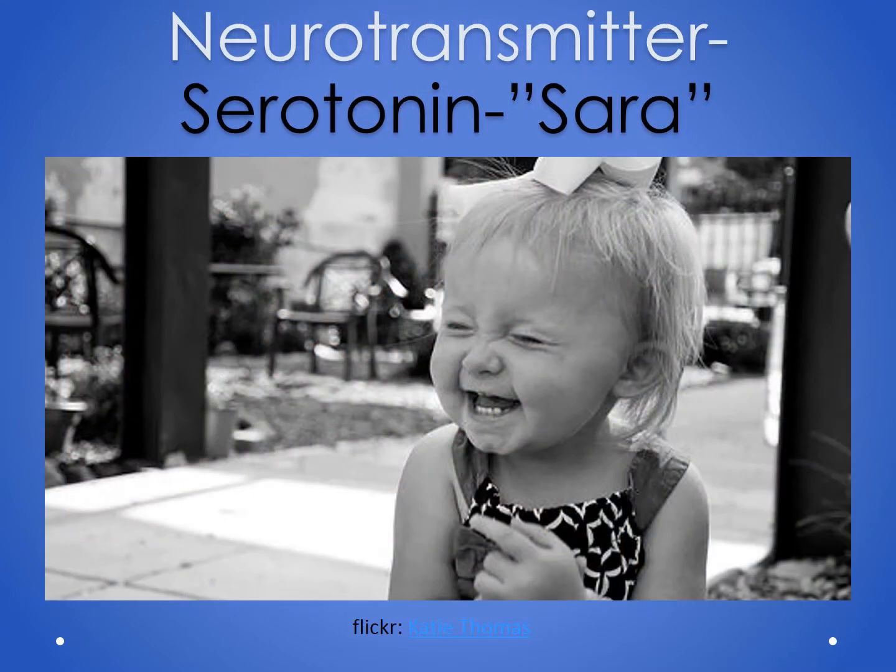Our next neurotransmitter is serotonin, or 'Sarah.' She's a happy girl — this neurotransmitter makes us happy. The common thought is that for antidepressants, people who are depressed are low on serotonin, so we have medications that enhance serotonin. We also have a lot of serotonin in our GI tract, and there are some serotonin medications that work for nausea and vomiting.